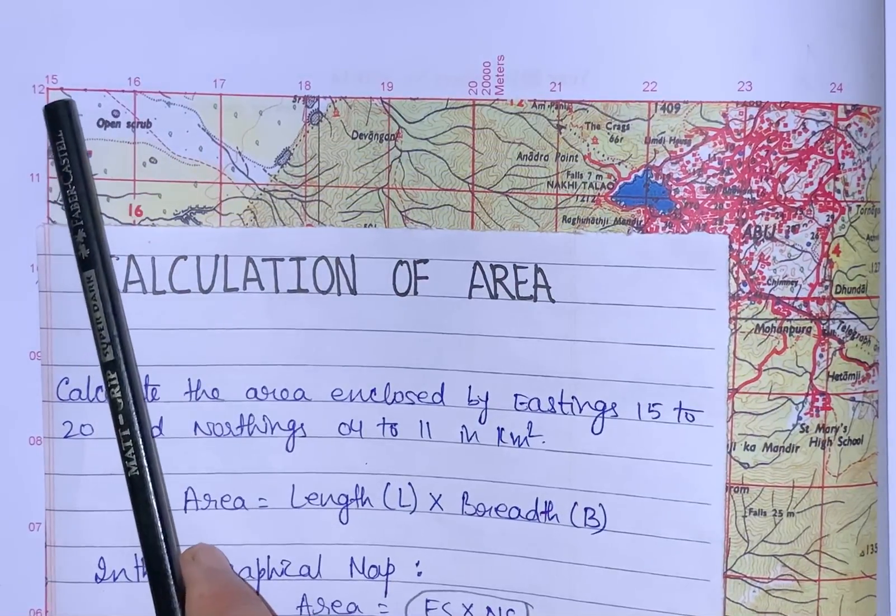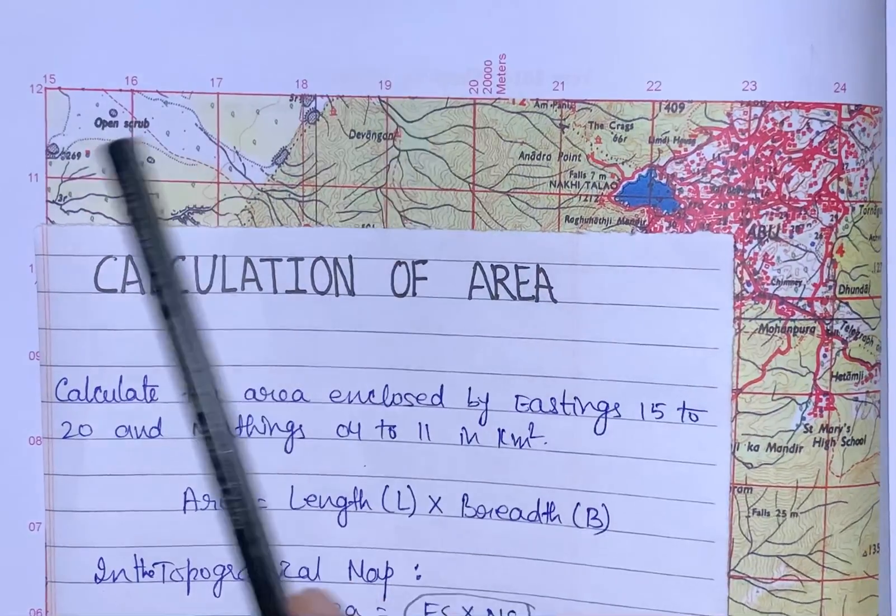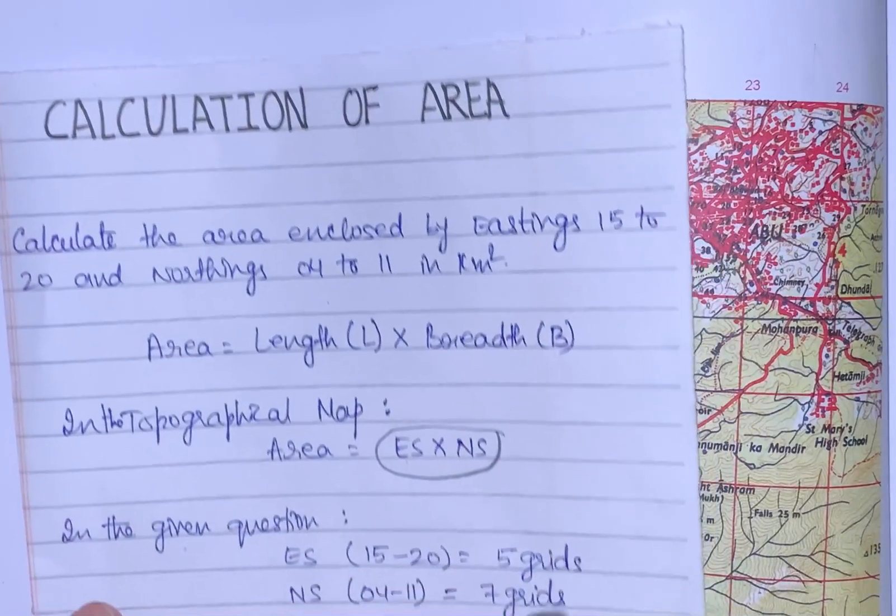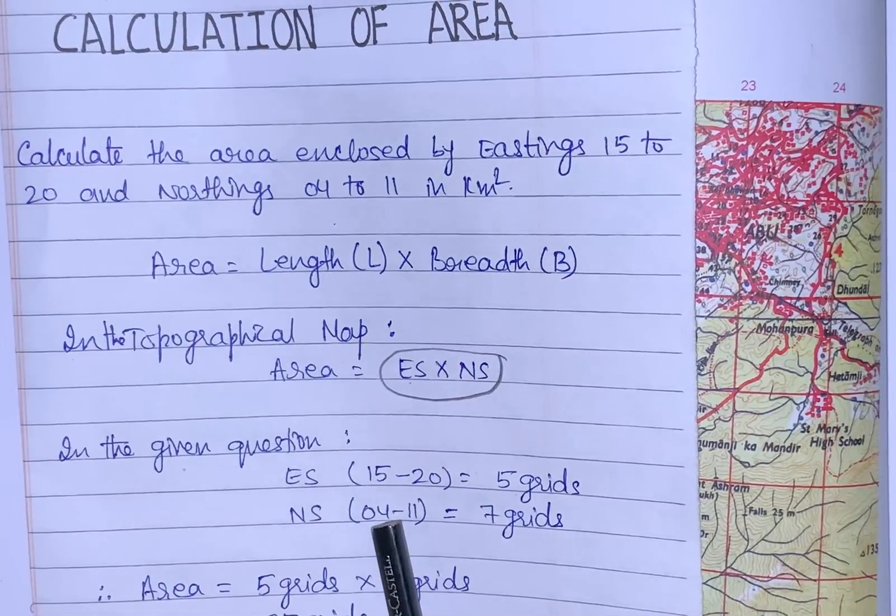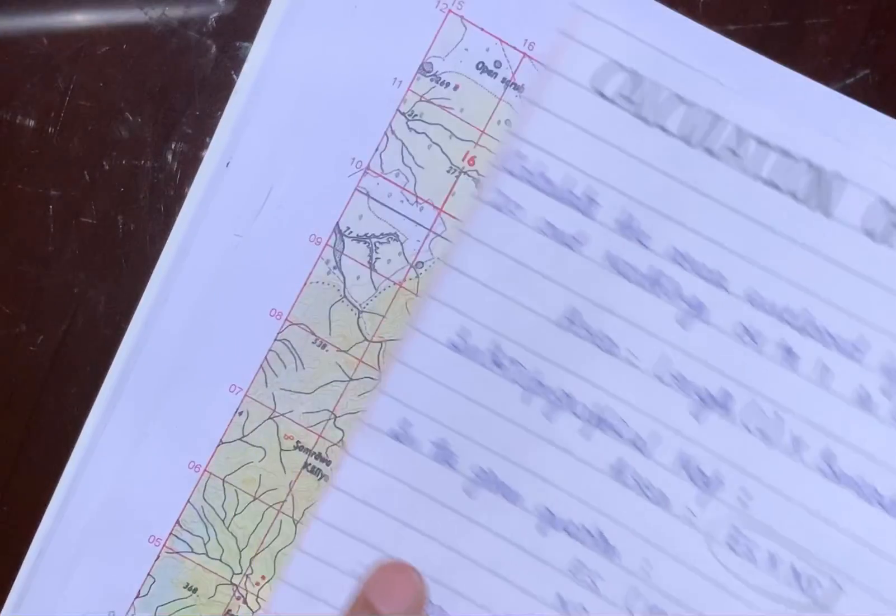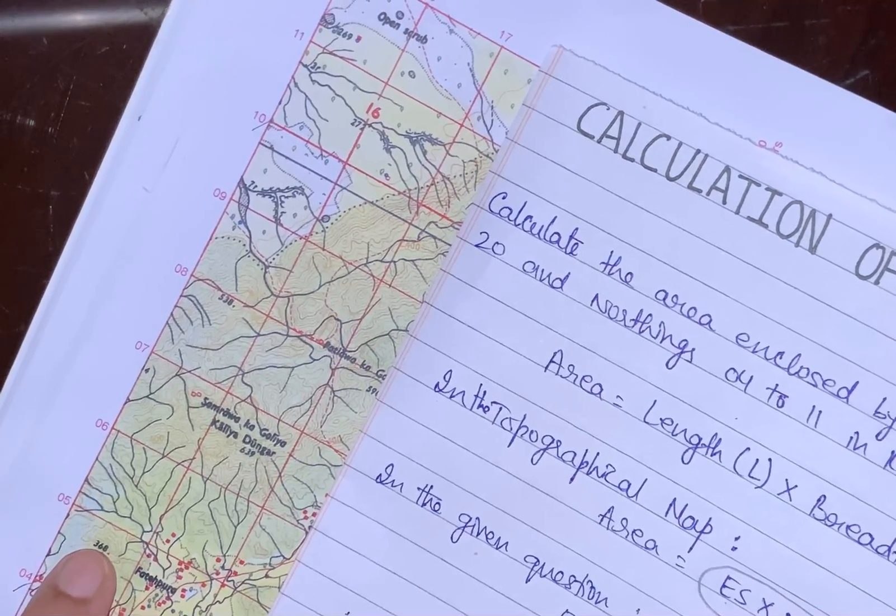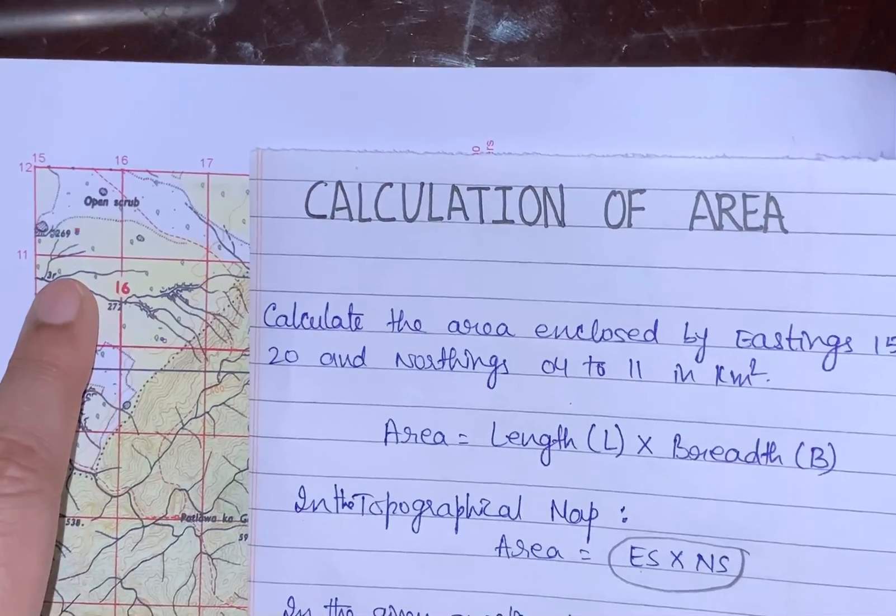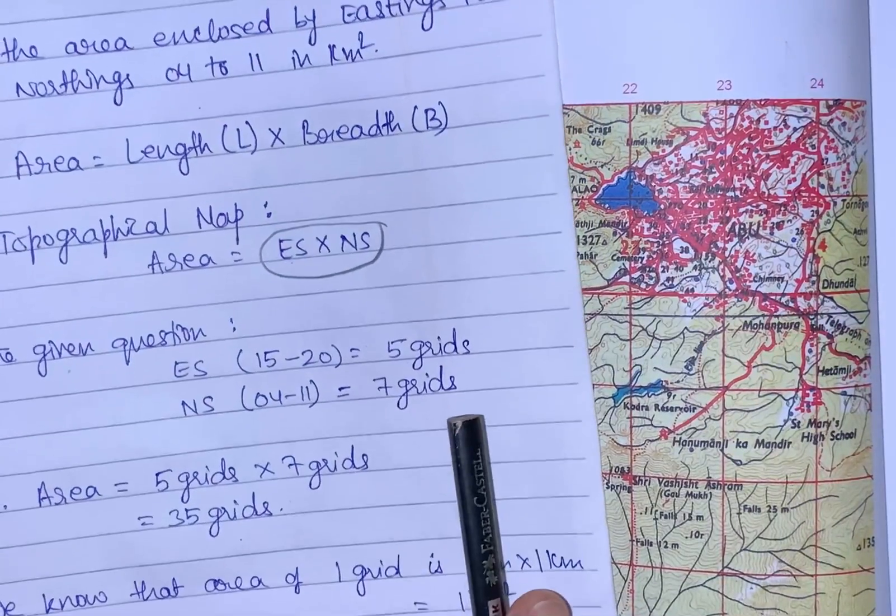In the given question, easting is given as 15 to 20. We will see in the map from 15 it will start and end at 20, so how many grids? We will count 1, 2, 3, 4, and 5 - five grids. In the same way, northing is 04 to 11. We will check in the map where it is starting: 04, then 1, 2, 3, 4, 5, 6, and 7. All together, 7 grids.